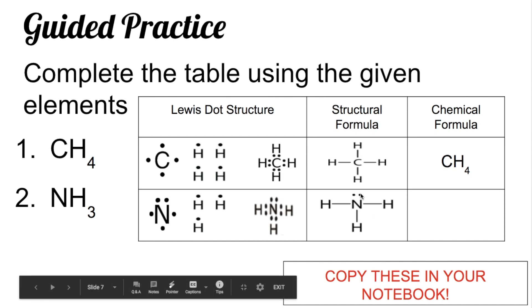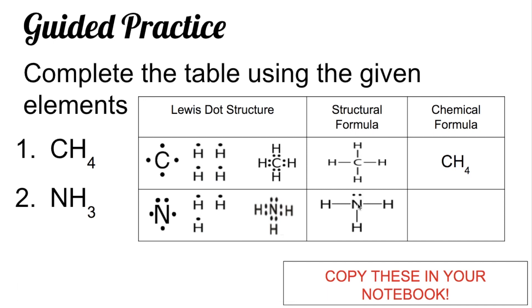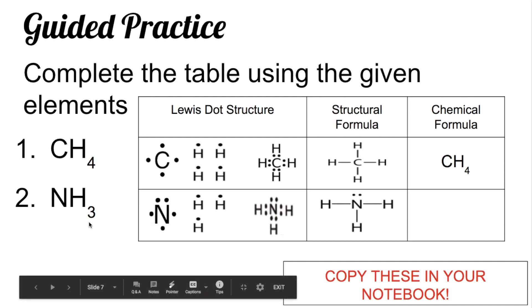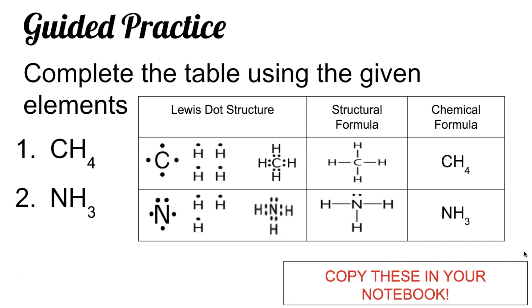Lone pairs are those pairs not being shared with another atom — they only belong to nitrogen. The chemical formula remains the same as given: NH3. That ends our lesson today. Make sure that you answer your work in Google Classroom. Good luck and stay safe.